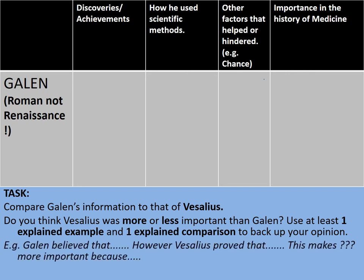For Galen's achievements: think about his work on human anatomy, his pig experiment showing the brain controls the body through the nerves, and how he used scientific means. He was also supported by influential people like the Caesars. His importance lies in the fact that his ideas — even incorrect ones — lasted for thousands of years. Pause the video here while you consider those comparisons.